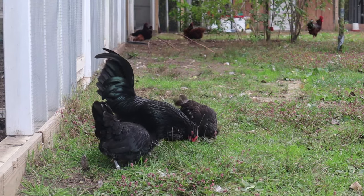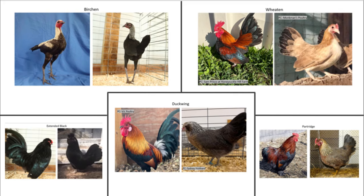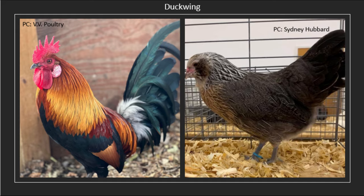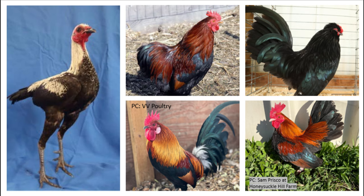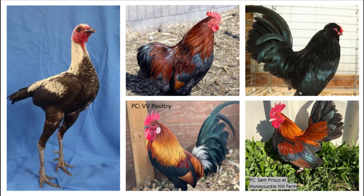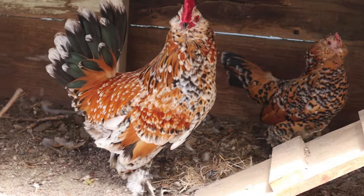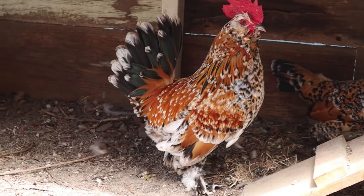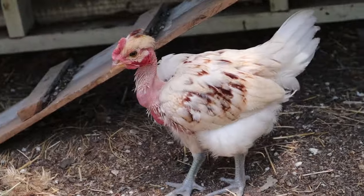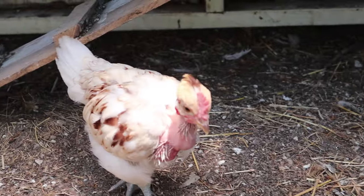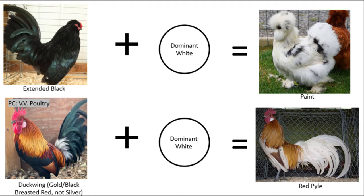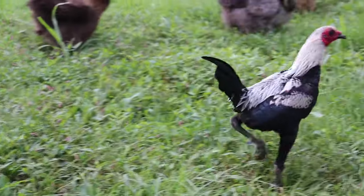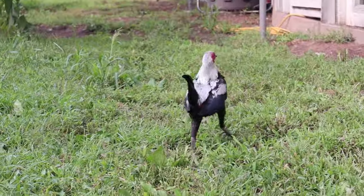That wraps up our brief overview of the five different alleles on the E-Locus: Extended Black, Birchen, Duckwing, Wheaten, and Partridge, covering differences between them phenotypically in males, females, and chicks, and some common varieties made on each. Understanding the E-Alleles can be very complex but is so important when creating varieties, because different genes work differently when combined with different E-Alleles. For example, adding dominant white to a bird based on Extended Black will give you a pied bird, but adding it to a bird based on Duckwing will give you red pile.